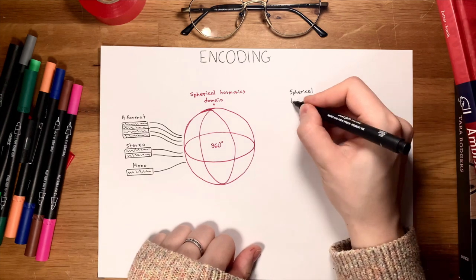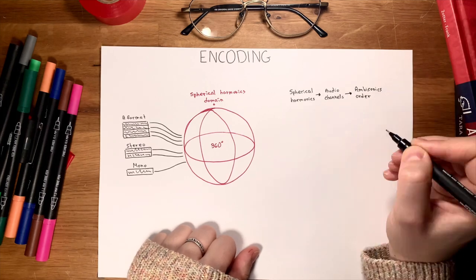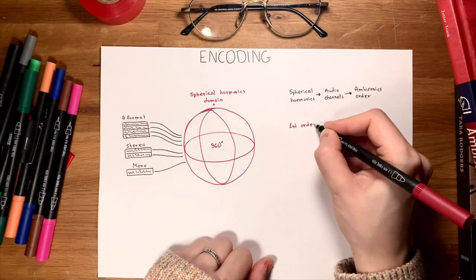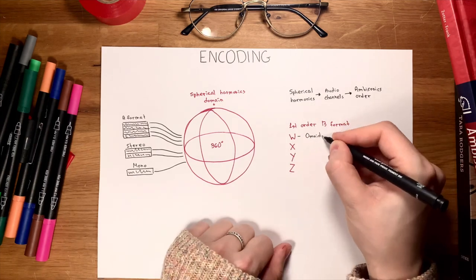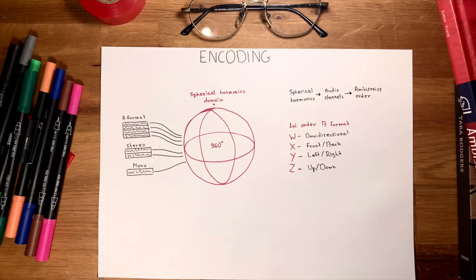The number of spherical harmonics defines the number of audio channels as well as the ambisonics order. For example, in first-order B-format, we have four spherical harmonics: W, X, Y, and Z. W is omnidirectional — the only channel that has no figure-of-eight pattern. X is front and back, Y is left and right, Z is up and down.